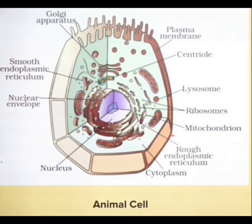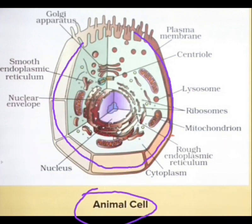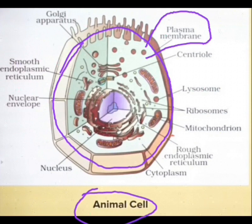Now let us talk about the animal cell. The outer layer is known as the plasma membrane. It allows only selected gases, water, or other materials to go inside the cell and come out. There are two types of transport in and out of the cell: diffusion and osmosis.